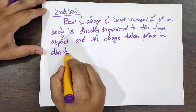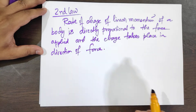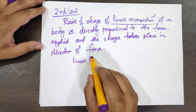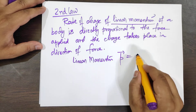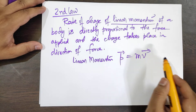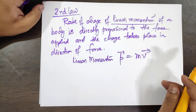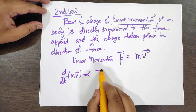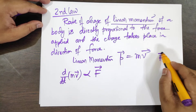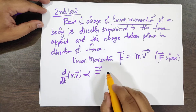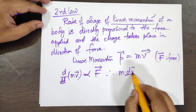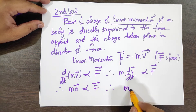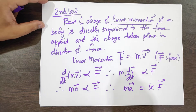From the second law, the linear momentum of the body is denoted by p, such that p equals m times v, where m is mass and v is velocity. As per the second law, the rate of change with respect to time, d/dt of mv, is proportional to F. Therefore we can write m dv/dt is proportional to force, so m·a is proportional to force.